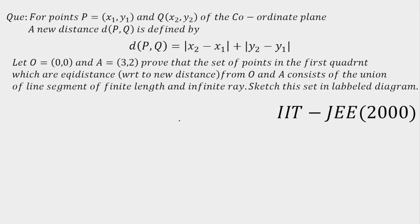In today's lecture, I am going to solve the most unique question asked by IIT JEE so far. The question is for the points P and Q of the coordinate plane, a new distance formula is defined. Usually the distance formula we use is √((x2−x1)² + (y2−y1)²). Now they have redefined the distance between two points as |x2−x1| + |y2−y1|.